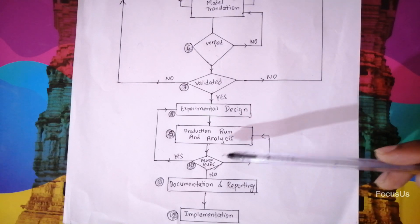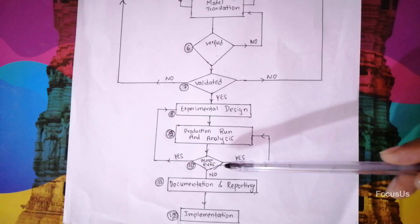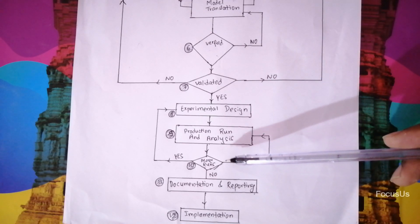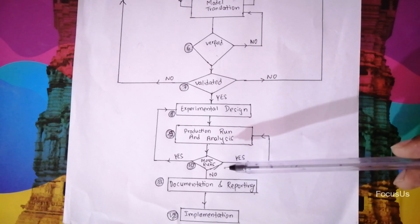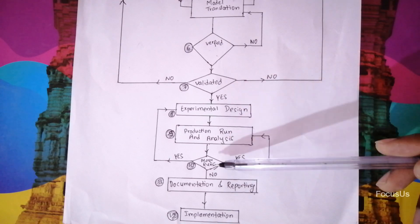Once we have run and analyzed it we again go to another step which is number 10, that is more runs. Here we do different more runs giving different data and test the system to the extreme. If we need to give again more run after this, then either our experimental design has failed or production run and analysis has failed. So we need to repeat it again. But if no more run test is to be done, then we move to the next point.